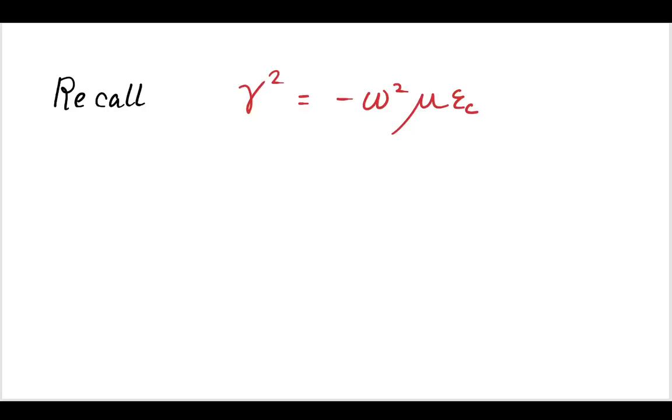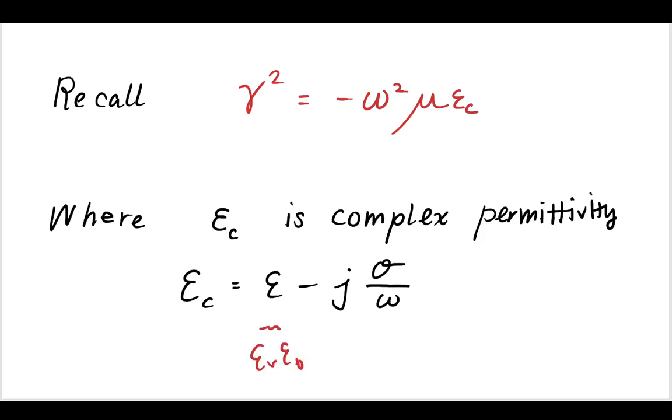Going back to those video series, you will recall that we defined gamma squared, this constant, such as this. Now, when we defined this constant, we said that epsilon sub c was a complex permittivity, which could have a real part and an imaginary part. The real part is the thing that you probably first learned about permittivity, that relative epsilon multiplied by the epsilon constant. Whereas the imaginary part is related to the conductivity of the medium.